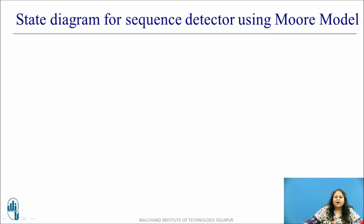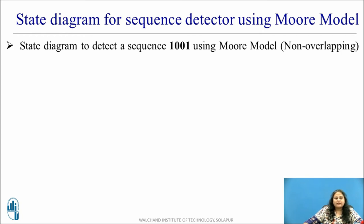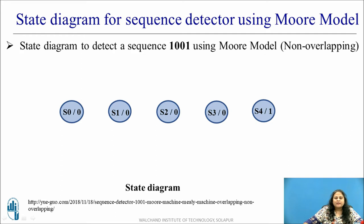Now let us see how the state diagram for the sequence detector using Moore model is obtained. Let us consider an example to detect a sequence 101 using the Moore model for non-overlapping type. As shown here, the number of states required to detect a sequence is always 1 unit more than the number of bits used in the sequence. Here the sequence has 3 bits, so the total number of states required is 3 plus 1, that is a total of 4 states required.